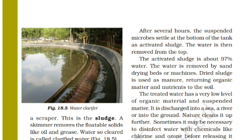Dry sludge is used as manure, returning organic matter and nutrients to the soil. The treated water contains very low levels of organic material and suspended matter.